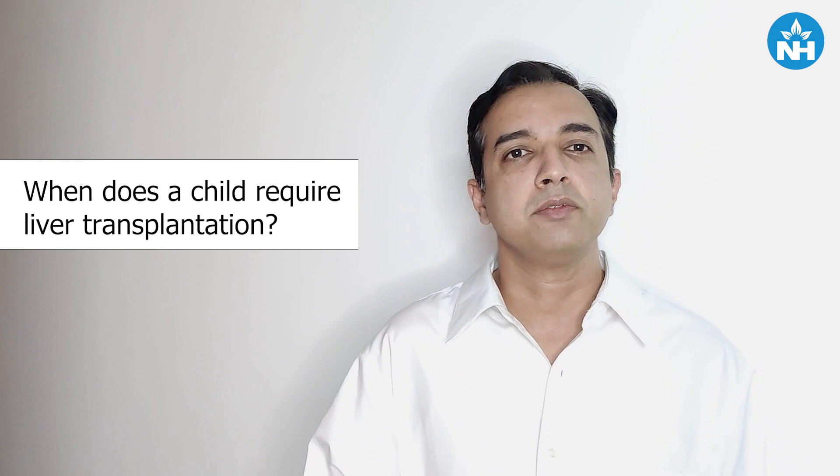Paediatric liver transplant is one of the most complex surgeries performed in children. It involves removal of the diseased liver from the child and placing a graft. Any child who has end-stage liver disease or liver failure requires transplantation. This usually occurs in conditions like biliary atresia or metabolic conditions. Sometimes children develop acute liver failure due to severe infection like hepatitis or in cases of poisoning, and then they require emergency liver transplantation.